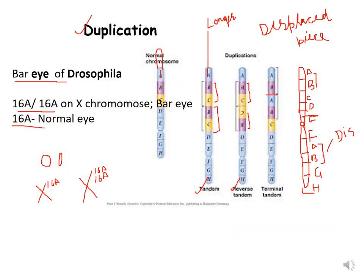The second structural aberration we are discussing is duplication. Duplication involves duplication of a part of a gene. An example is bar eye of Drosophila, which occurs due to duplication of the 16A gene on the X chromosome. Because of the duplication, one of the chromosomes is longer than the original chromosome.